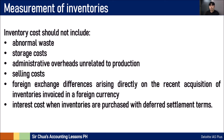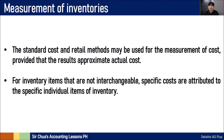What is NOT included in the amount we place as inventory cost? Abnormal waste, storage costs, administrative overheads not related to the inventory production process, selling costs, foreign exchange differences arising directly on the recent acquisition of inventories invoiced in a foreign currency, and the interest cost when inventories are purchased with deferred settlement terms. Those are not part of the cost of inventory that should be included when you measure them in the statement of financial position. The standard cost and retail methods may be used for measurement of cost provided that the results approximate actual cost.